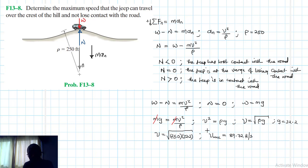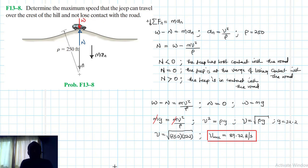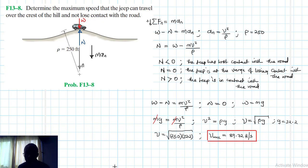This is the maximum velocity that the jeep can travel over the crest of the hill and not lose contact with the road — or be at the verge of losing contact. I hope this video was helpful. If it was, give me a thumbs up, like the video, continue subscribing, and I'll see you in the next screencast.